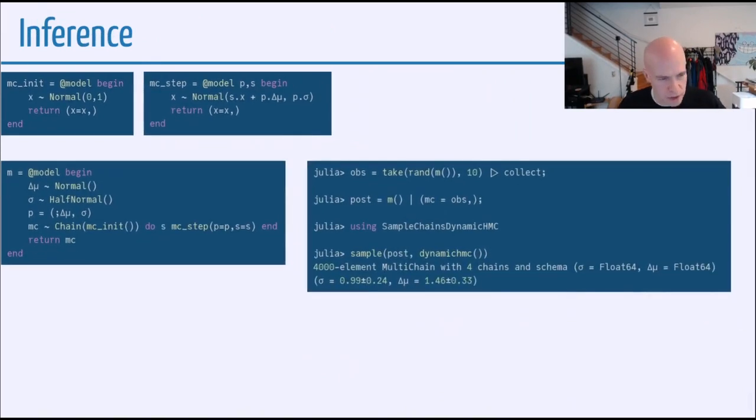Now let's take a look at what this would actually look like for inference. So say we have some observations that come from drawing a random sample from the model, and just taking the first 10 elements and collecting those into a vector, call that OBS for observations. Then we can look at the posterior. In this case, the posterior is the model conditional on the named tuple, where the Markov chain is equal to the observations that we've observed.